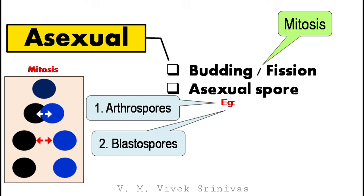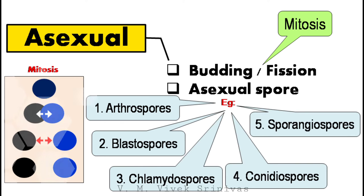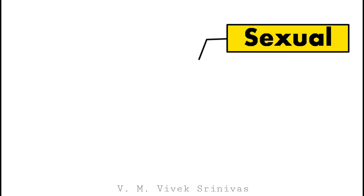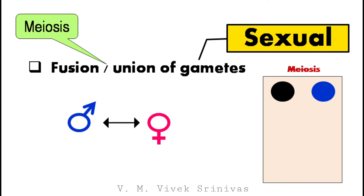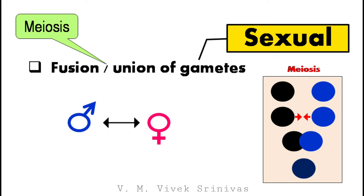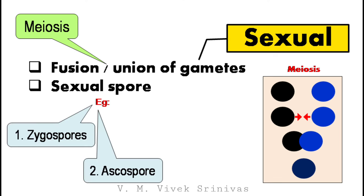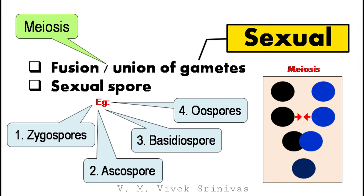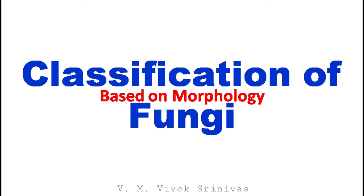Examples of asexual spores are arthrospores, blastospores, chlamydospores, conidiospores, and sporangiospores. Sexual reproduction occurs by fusion or union of male and female gametes, and this happens by meiosis — from two cells, one cell is formed. As a result of sexual reproduction, sexual spores are produced. Examples of sexual spores are zygospores, ascospores, basidiospores, and oospores.